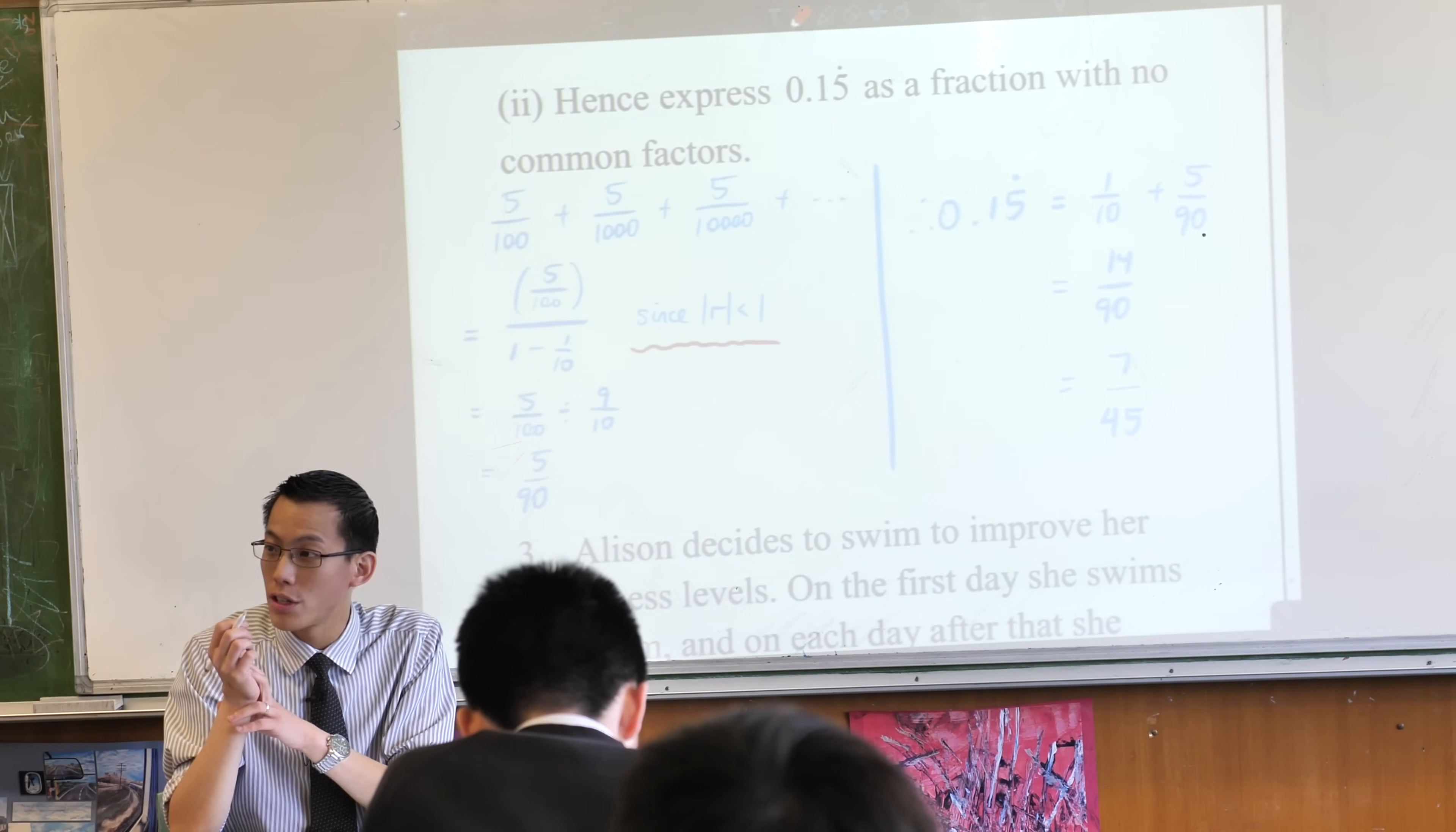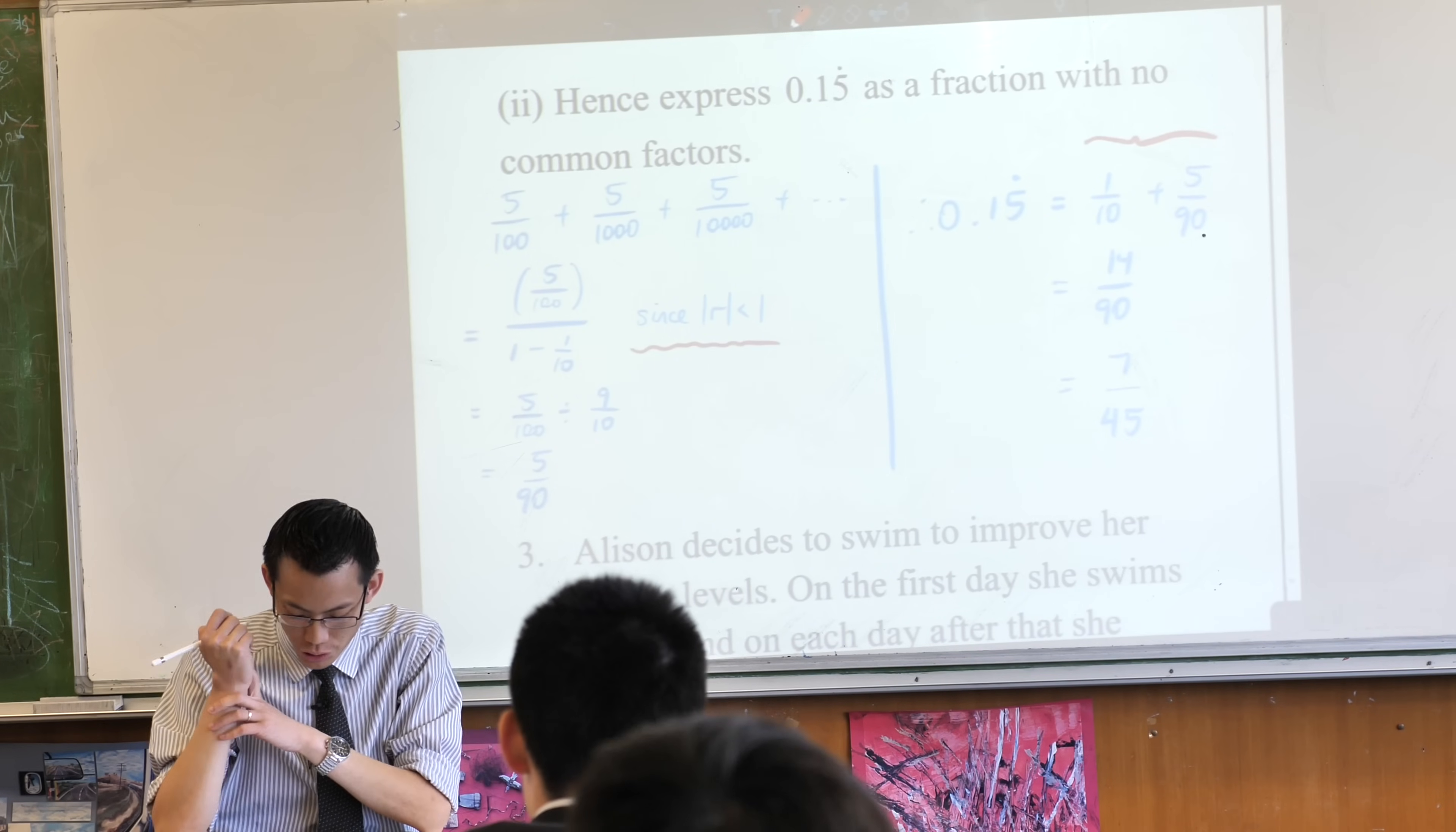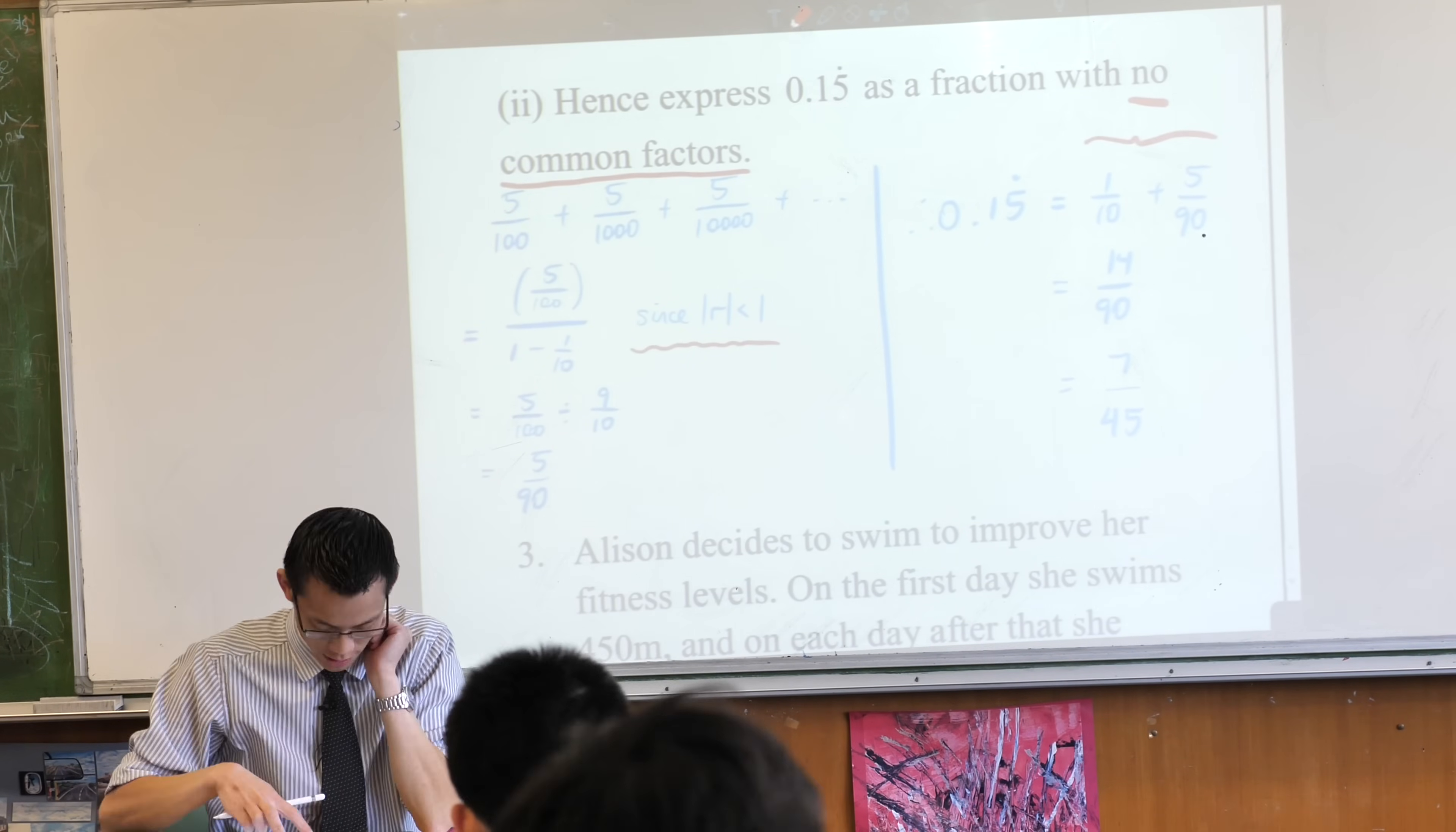What I chose to do was to separate out the limiting sum part from the 1 over 10 part, which just hangs out the front, and then over here I combine them into one fraction. So 14 on 90, 7 over 45, you do have to say 7 over 45, by the way. What's the phrasing in the question that tells you that? No common factors. So that's a better way of saying it than simplify, and that's what they mean. So, thumbs up? Happy times? Great.